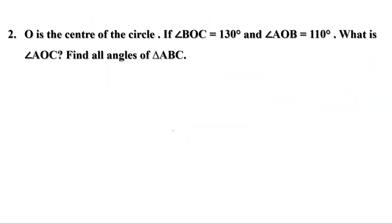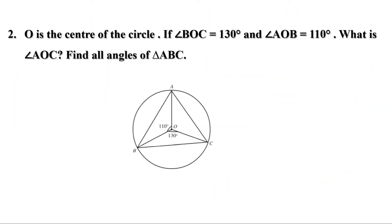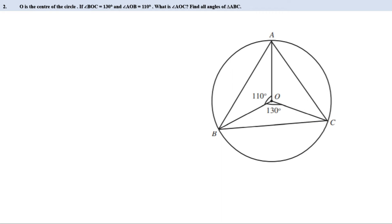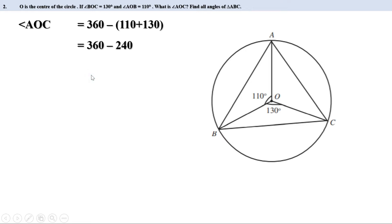Second problem: O is the center of the circle. If angle BOC equals 130 degrees and angle AOB equals 110 degrees, what is angle AOC? Let angle AOC be unknown. We know the sum of all three angles is 360 degrees. Therefore angle AOC equals 360 minus (110 plus 130).